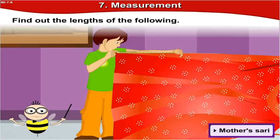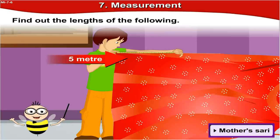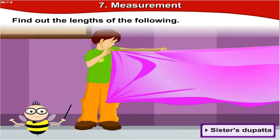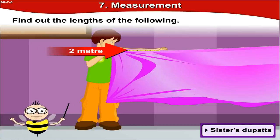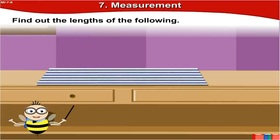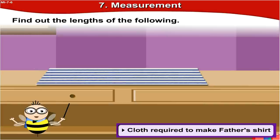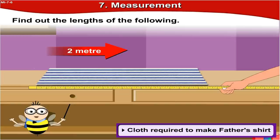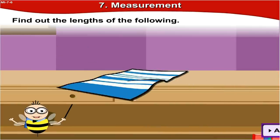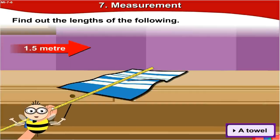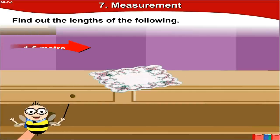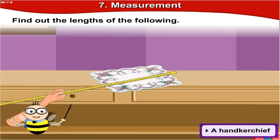Your mom's sari — let's try to measure it. It is 5 meters. Your sister's dupatta's length — that is 2 meters. Length of cloth required for your father's shirt — that would be around 2 meters. The length of a table is 1.5 meters. And the length of a handkerchief — it is 20 centimeters.